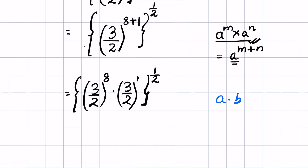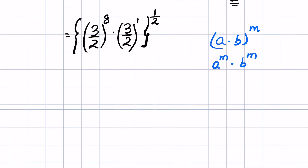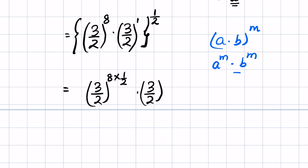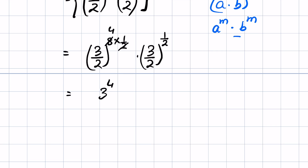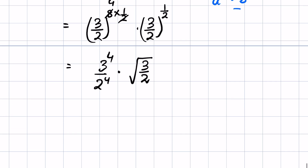Using the identity (a times b) whole raised to the power m equals a raised to the power m times b raised to the power m, we write (3 upon 2) raised to the power 8 times 1 upon 2, times (3 upon 2) raised to the power 1 upon 2. Since 2 times 4 is 8, this gives 3 raised to the power 4 upon 2 raised to the power 4, times the square root of (3 upon 2). So 3 to the 4 is 81 and 2 to the 4 is 16, times square root of 3 upon square root of 2.